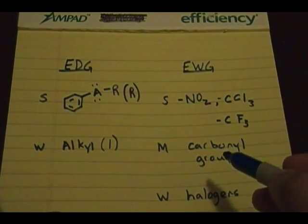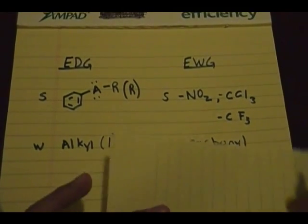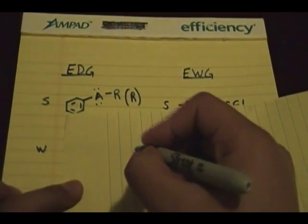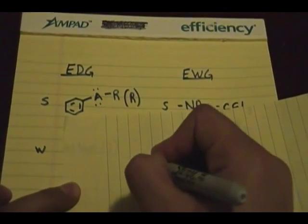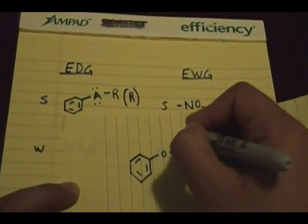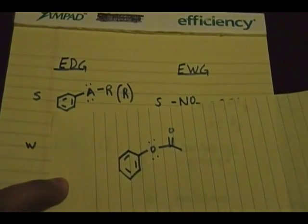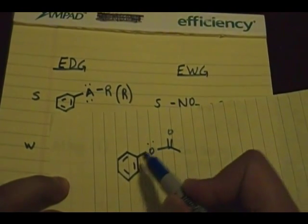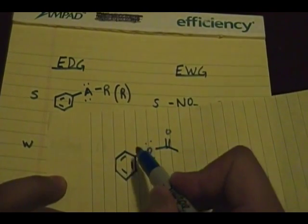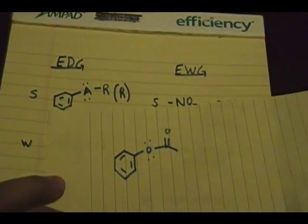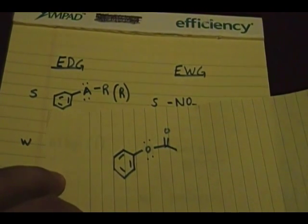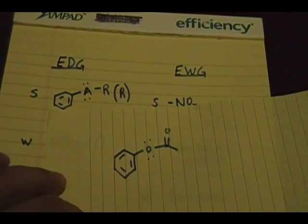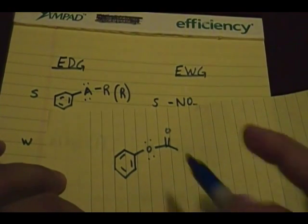Carbonyl groups are generally considered moderate electron withdrawing groups. However, if you have an aromatic ring with an ester where the oxygen is directly attached to the ring carbon, that oxygen has lone pairs and can donate via resonance. In that case it's considered an electron donating group — the electron donating effect wins out over the electron withdrawing nature of the carbonyl.